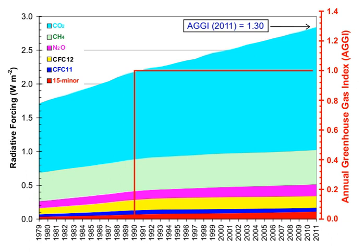Water vapor accounts for the largest percentage of the greenhouse effect, between 36% and 66% for clear sky conditions and between 66% and 85% when including clouds. Water vapor concentrations fluctuate regionally, but human activity does not directly affect water vapor concentrations except at local scales, such as near irrigated fields.